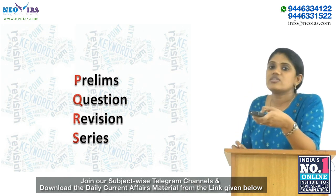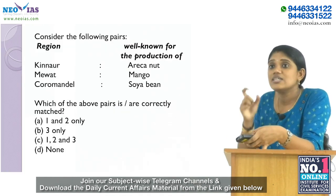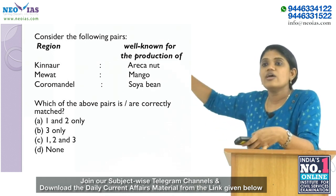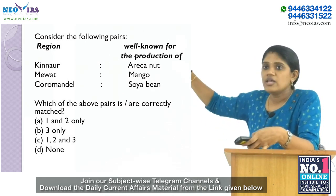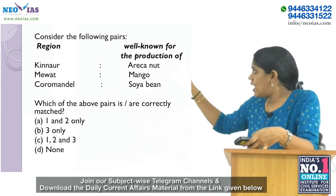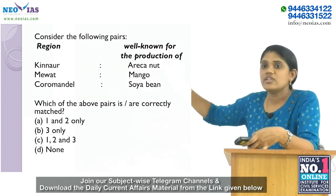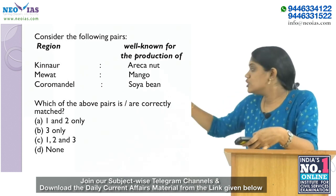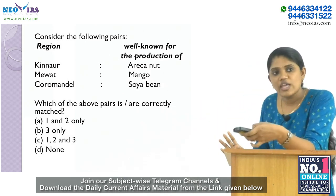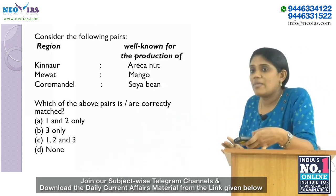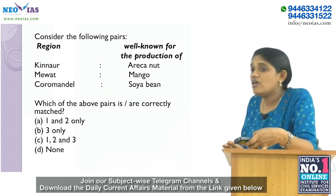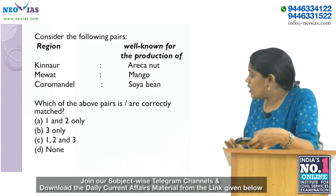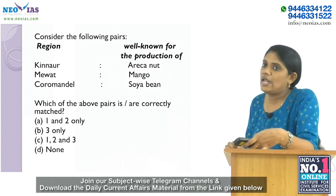In the prelims question revision series, consider the following pairs of regions and what they are well-known for: 1. Kinnaur – Areca nut; 2. Mewat – Mango; 3. Coromandel – Soybean. Which of the above pairs are correctly matched? Options: A) 1 and 2 only, B) 3 only, C) 1, 2, and 3, D) None.